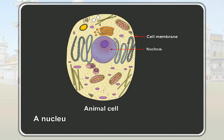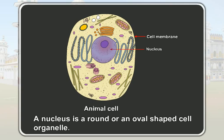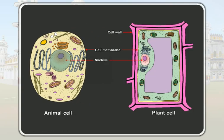A nucleus is a round or an oval shaped cell organelle. A plant cell also has a nucleus, but its nucleus is not centrally located like that of an animal cell. A thin membrane surrounds the nucleus. This membrane that surrounds the nucleus is called the nuclear membrane.